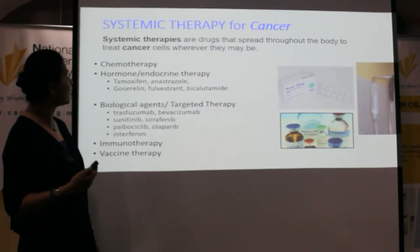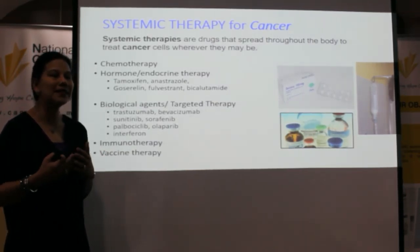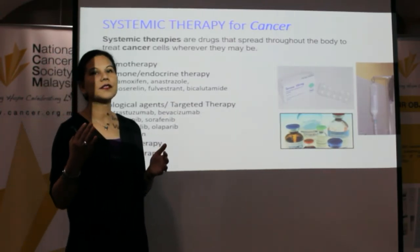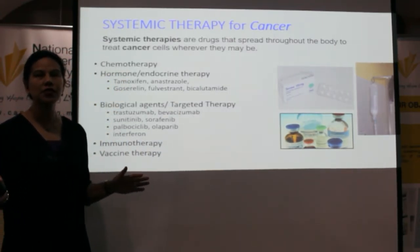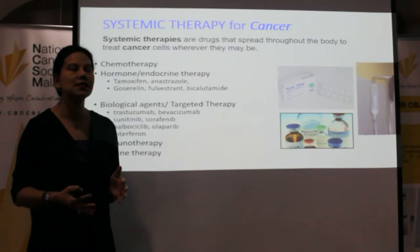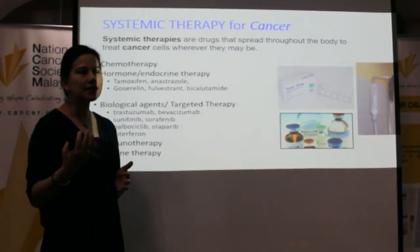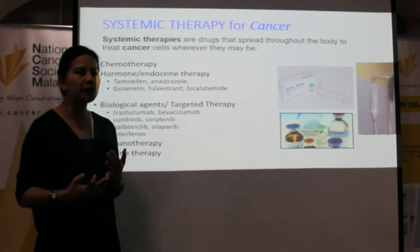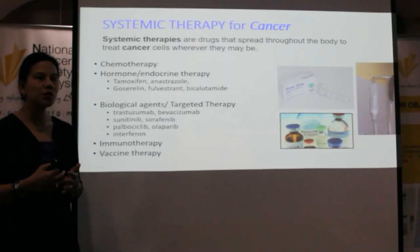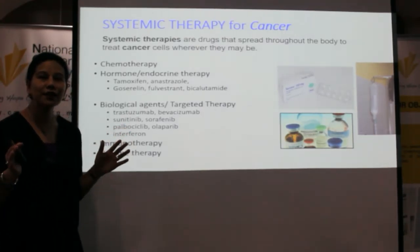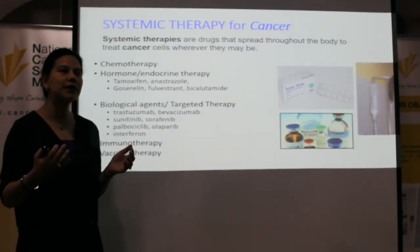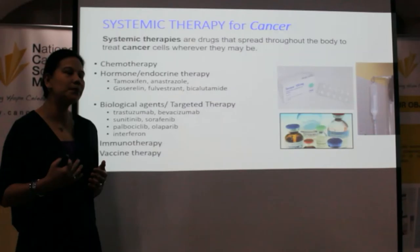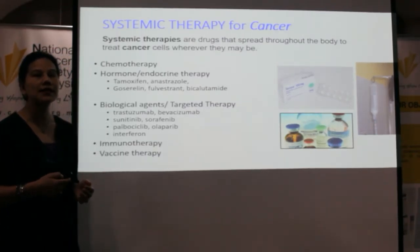For systemic therapy, we are talking about drugs or medicines given to patients that spread throughout the body to treat cancer cells wherever they may be — unlike radiation or surgery which address cancer at a specific location. Systemic therapies include chemotherapy, hormonal or endocrine therapy used for breast and prostate cancers, biological agents or targeted therapy, and immunotherapy including vaccine therapy.